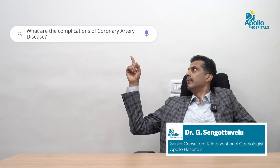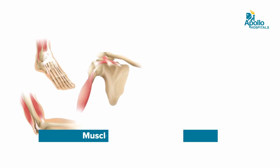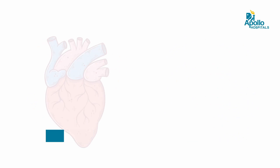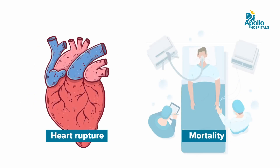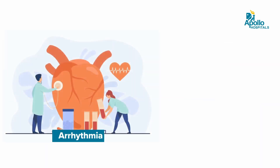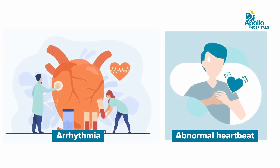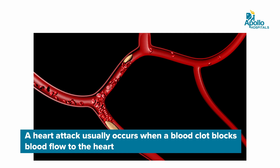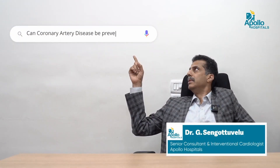What are the complications of coronary artery disease? Complications can vary from a heart attack to muscle damage, heart failure, and in severe cases, heart rupture leading to mortality. Another important complication is arrhythmias — abnormal heartbeats triggered by sudden reduction of blood flow during a heart attack — which can cause the heart contractions to fail, leading to a sudden cardiac event.